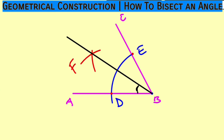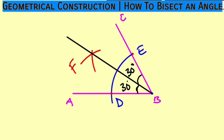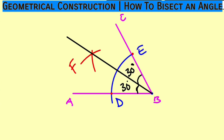This is 30 degrees, and this is also 30 degrees. You can use your protractor to confirm that — this is 30 degrees, halfway between 20 and 40 degrees. This is all I have for you today. Thank you for watching, do have a nice day.